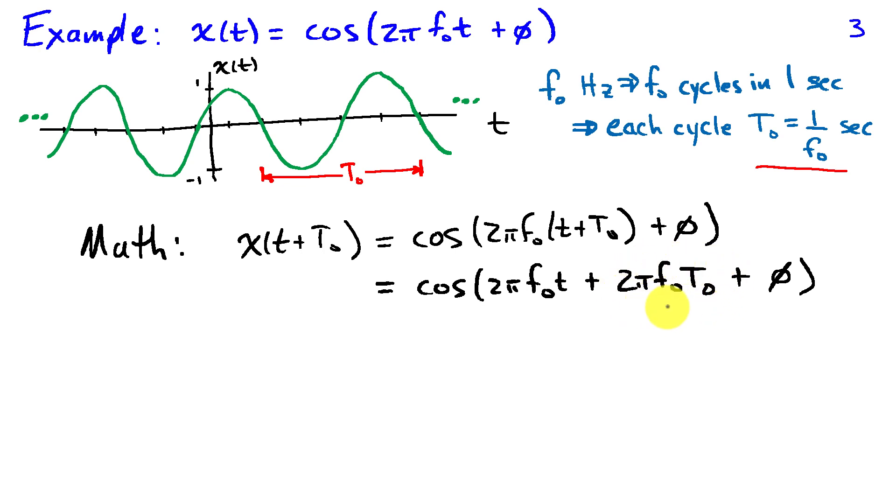So this is just a phase shift of the cosine. The phase shift of 2 pi leaves the cosine unchanged. So if f naught t naught is equal to 1 then I can ignore this term.